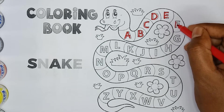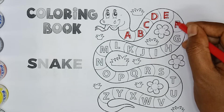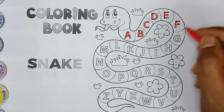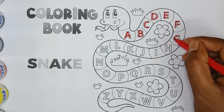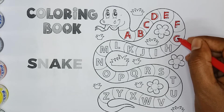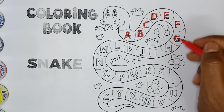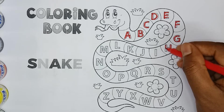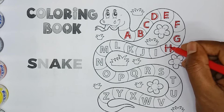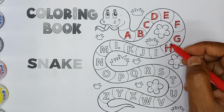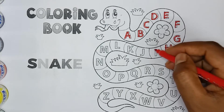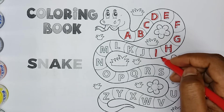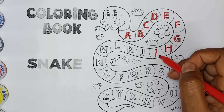F, F for fish, red color F. G, G for great, red color G. H, H for hand, red color H. I, I for ice cream, red color I.